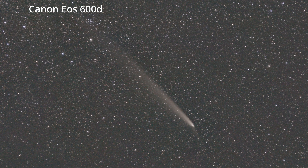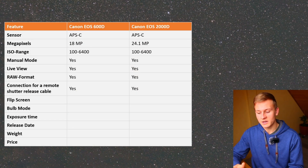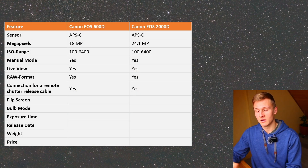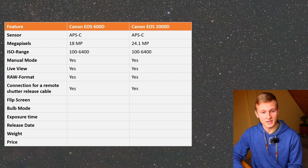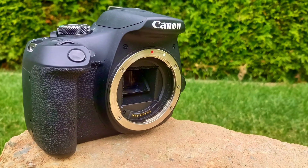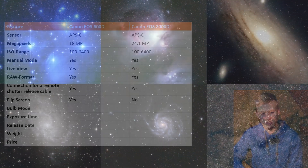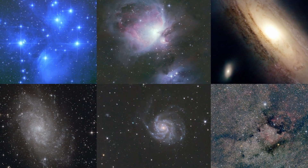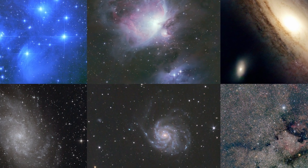The next important aspect is the connection for a remote shutter release cable. We want to capture images all night long, so this connection is essential for capturing multiple images. Both cameras have a connection for a remote shutter release cable. Regarding the flip screen: the Canon EOS 600D has a flip screen while the Canon EOS 2000D does not. When I used the 600D for the first time for deep sky astrophotography, having a flip screen was extremely helpful, making it a big advantage of the 600D.